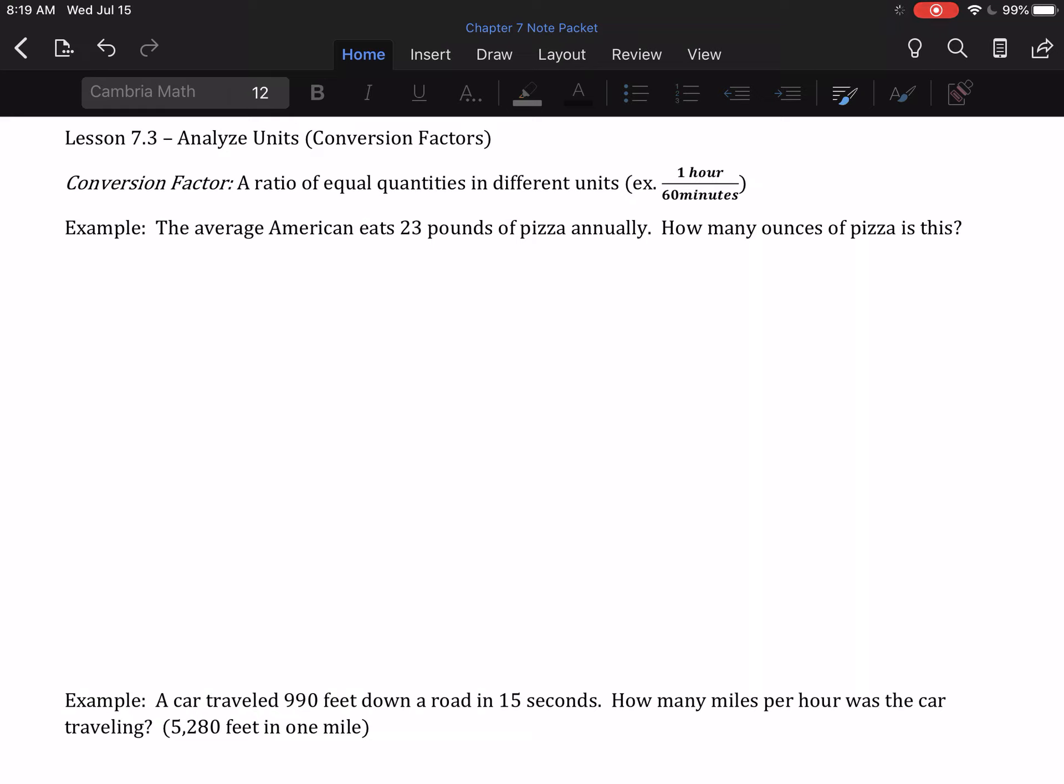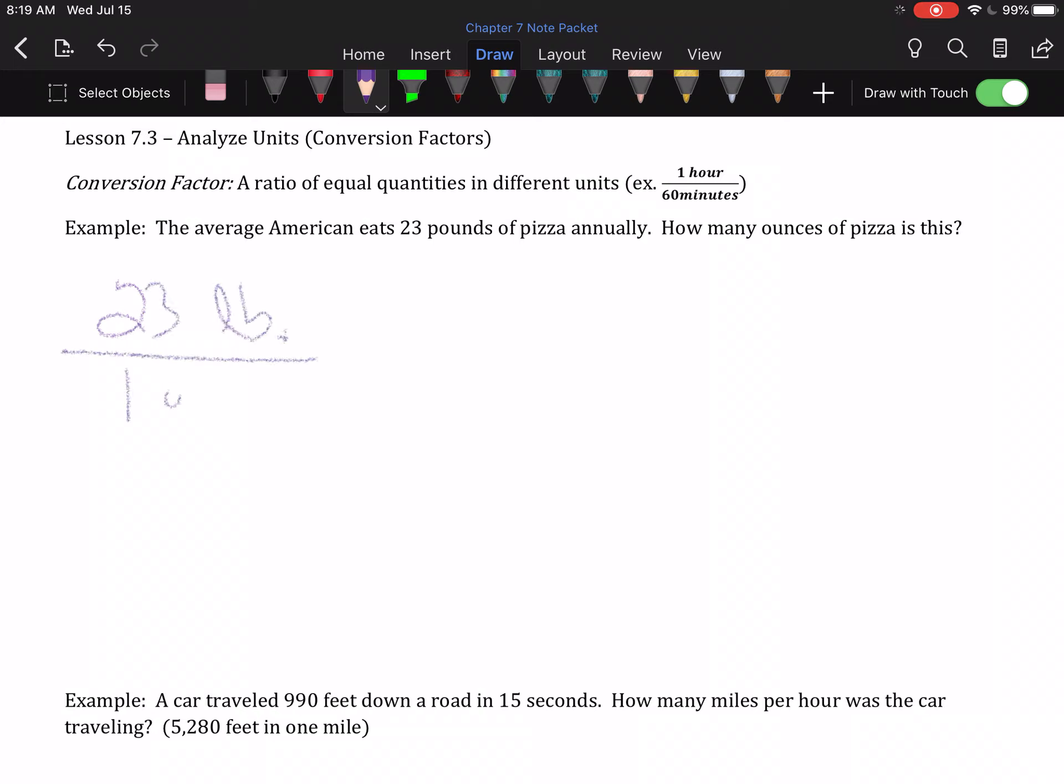So let me show you how this works. The average American eats 23 pounds of pizza annually. I was just told that the average person eats 23 pounds of pizza in one year. I'm asked how many ounces of pizza is this. Right now, I have pounds in a year. I'm asked for ounces in a year. That means I have to change pounds into ounces. Which means I'm going to multiply this by another fraction. Just one fraction. I'm changing pounds to ounces. I only need one fraction to do this.